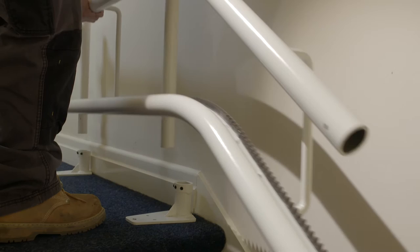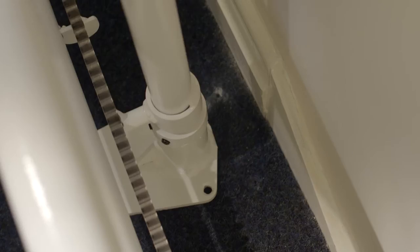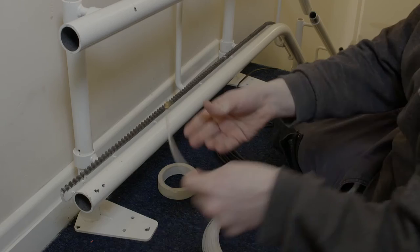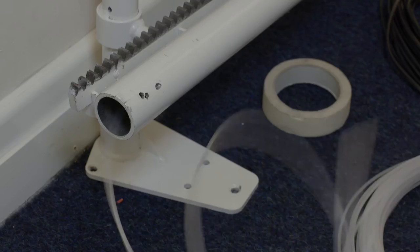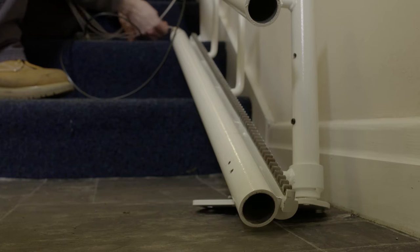Starting at the top of the stairs, place each rail section on the stairs in the correct leg base. Using the cable feeder, start by feeding the 2 core charging cable through the lower tubing of each rail section, starting at the top and working down. Ensure a minimum of 150mm of cable at each end.